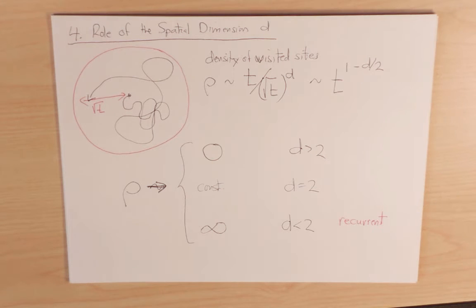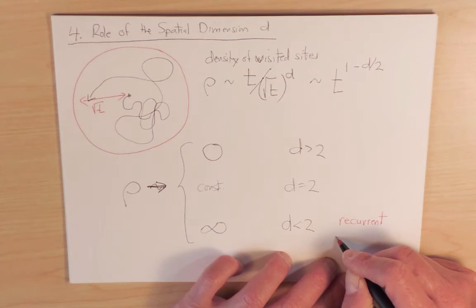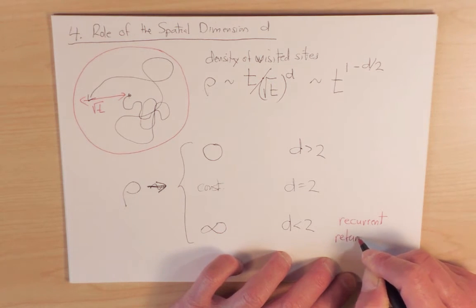So in particular, if you start at some site, you are guaranteed that you must return eventually to that site. So the recurrent regime is also the regime where the return of the random walker is certain.